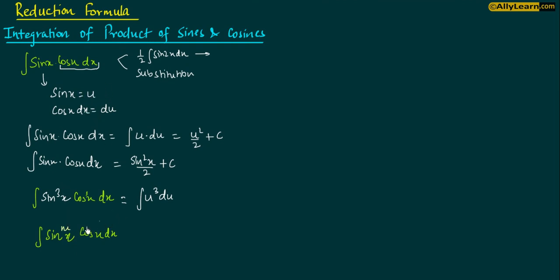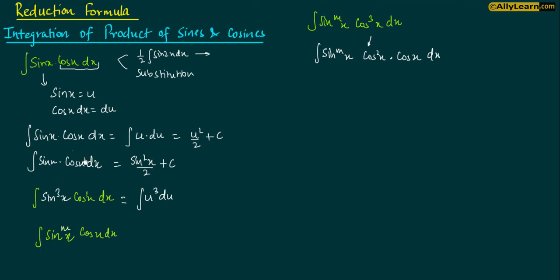तो चलिए अब देखते हैं, cos की power vary करने से क्या होगा? Integration of sin^m x · cos³x. मैंने एक odd number लिया है, let's say 3. तो देखिए मैं इसको कैसे लिख सकता हूं - I can rewrite it as sin^m x · cos²x · cos x dx. ऐसा मैं क्योंकि मुझे cos x dx चाहिए, क्योंकि sin x को u put करने के बाद cos x dx du के equal होगा. So basically I need to separate one power of cos so that I can have a term cos x dx.